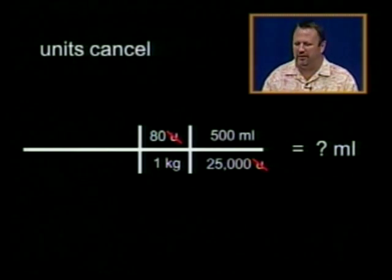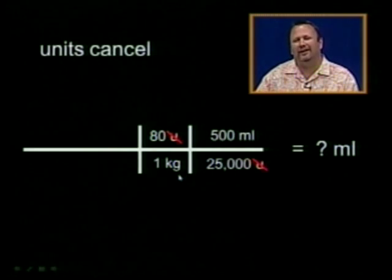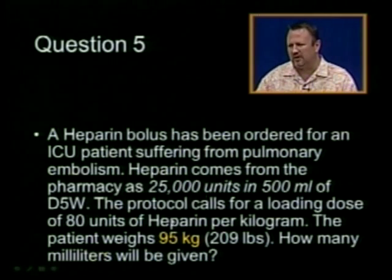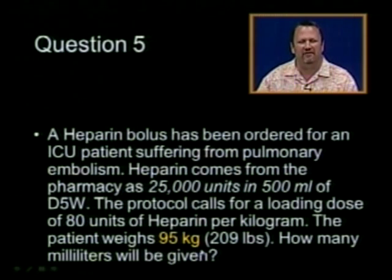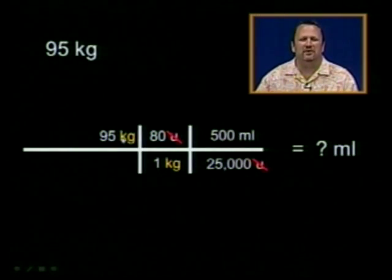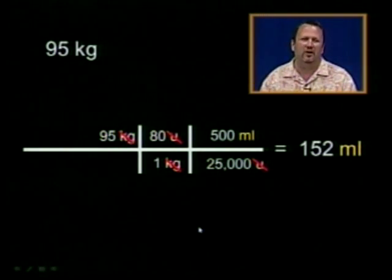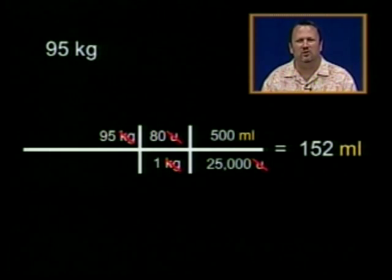The question wasn't how many milliliters per kilogram. The question is how many milliliters. So I need that kilogram unit to cancel out. So notice my patient weighs 95 kilograms. By putting the 95 kilograms in the numerator right here, notice my kilograms cancel out. The kilogram over a kilogram is equal to one.